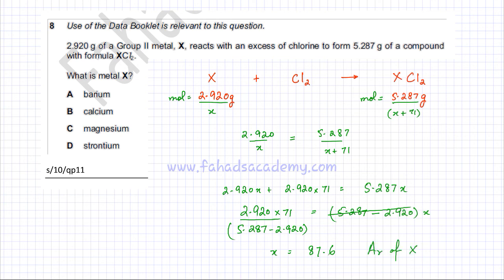We need to find out which element has the AR of 87.6. If you look at the periodic table, you will notice that strontium is 87.6. The AR of strontium is 87.6, so option D is going to be the correct answer for this question.